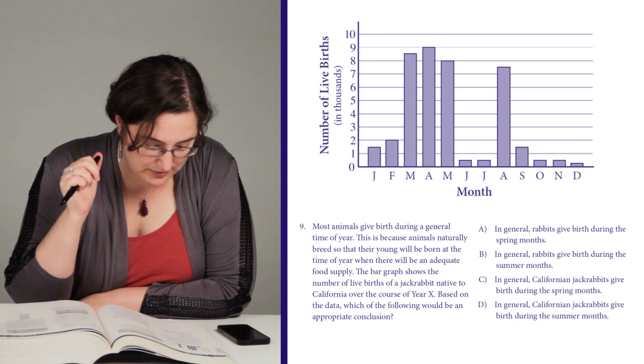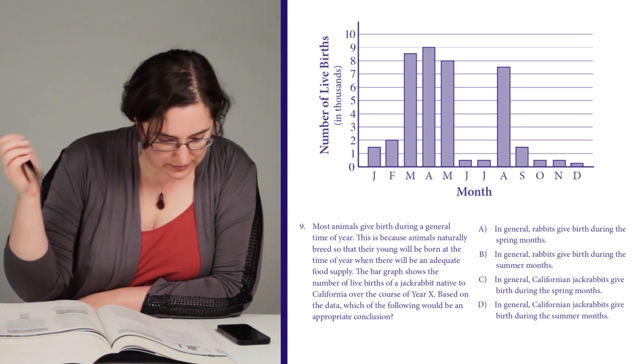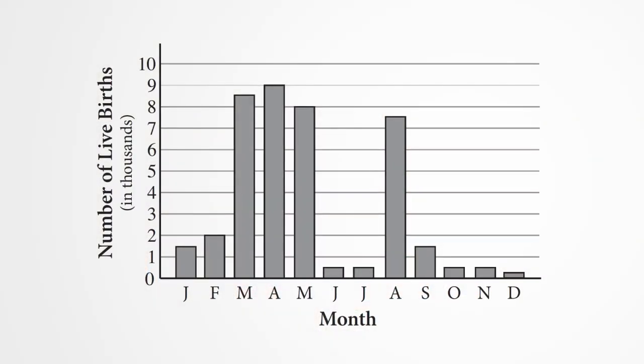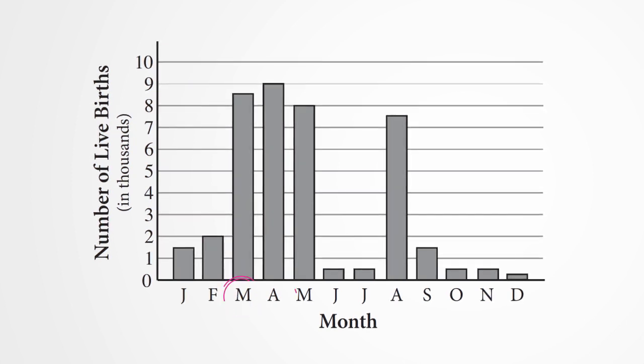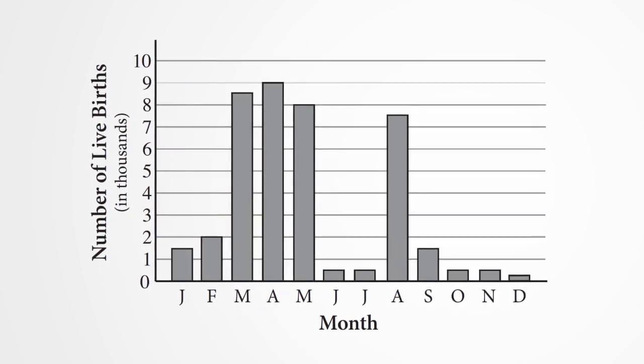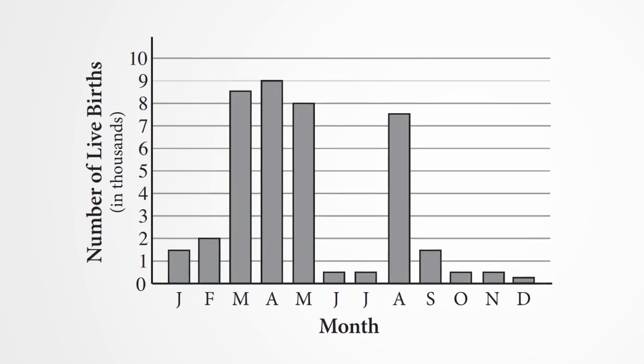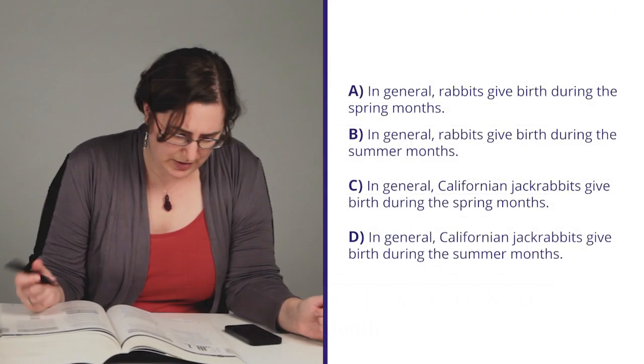So maybe that sentence about food supply is going to be relevant because I'm drawing conclusions. We've got a lot of jackrabbit babies born in March, April, and May, and then not so many, and then suddenly a whole bunch in August again, and then not so many in these other months.